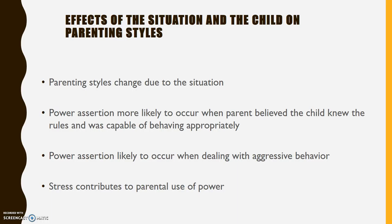What is the effect of the situation on parenting styles? Parenting styles are going to change depending on the situation. You may generally be authoritative or permissive, but depending on the situation, that may change. Power assertion is more likely to happen when the child knew the rules and was capable of behaving appropriately. Power assertion is also likely to occur when dealing with aggressive behaviors — it's natural to want to meet aggression with aggression. Power assertion also tends to happen when parents are more stressed. The situation can affect how we parent as well.